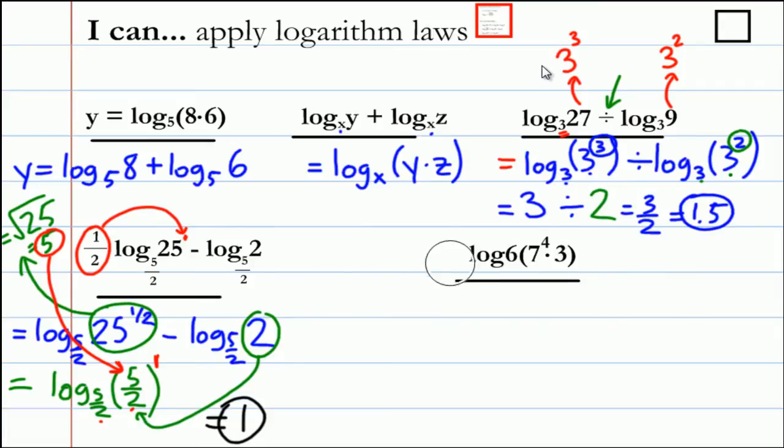Last example for the log laws. This should be base 6. So log base 6 of 7 to the 4th times 3. If we write this in two separate log terms, we would write log base 6 of 7 to the 4th plus log base 6 of 3.